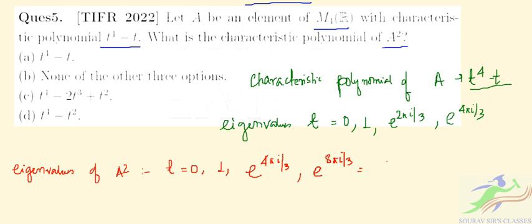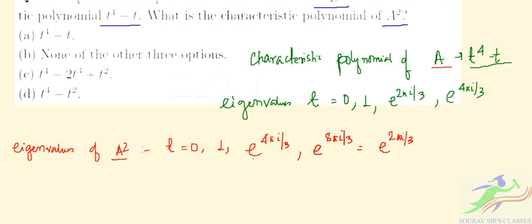Which is nothing but e^(2πi/3). So the eigenvalues of A and eigenvalues of A² are both equal. We can say that the characteristic polynomial...